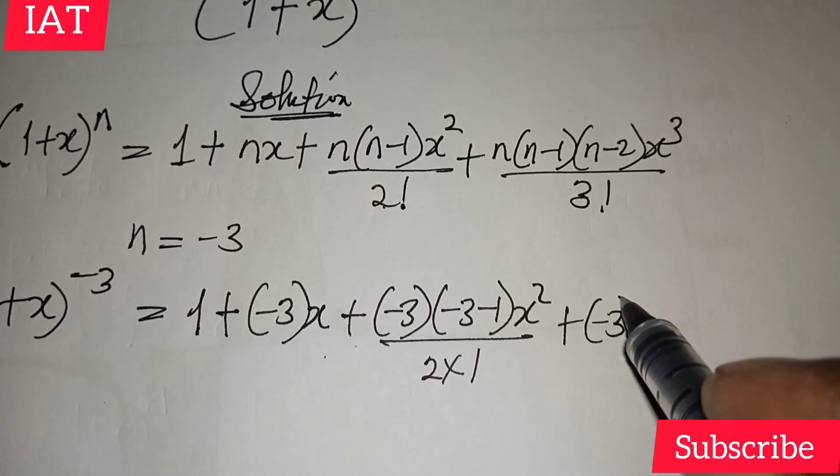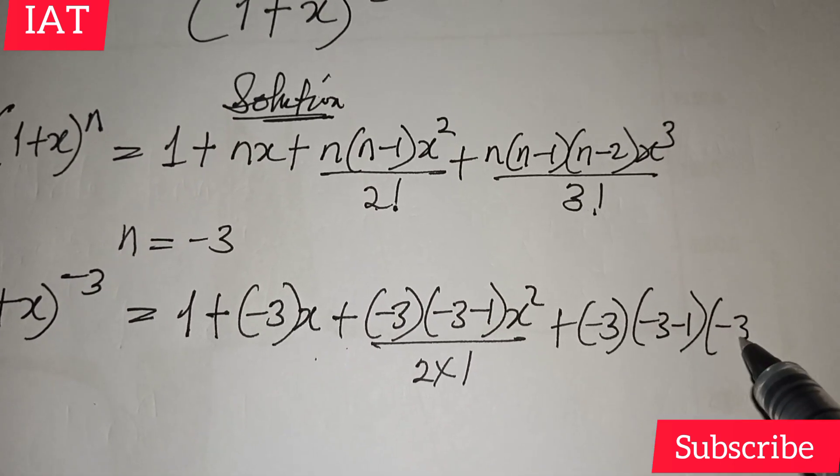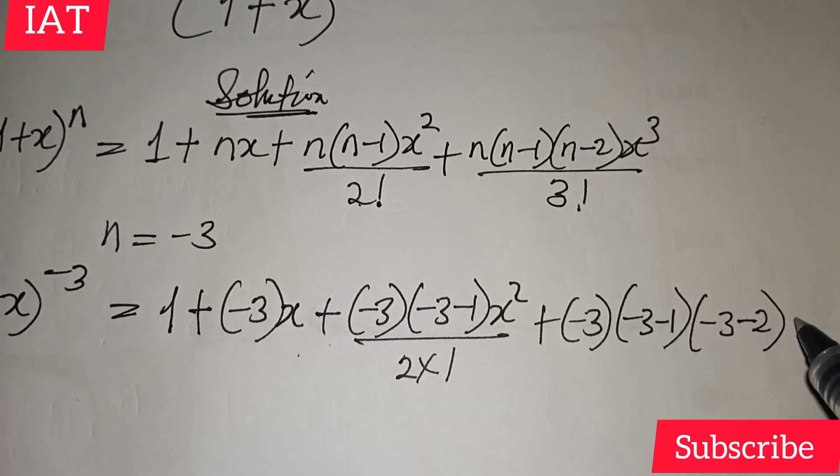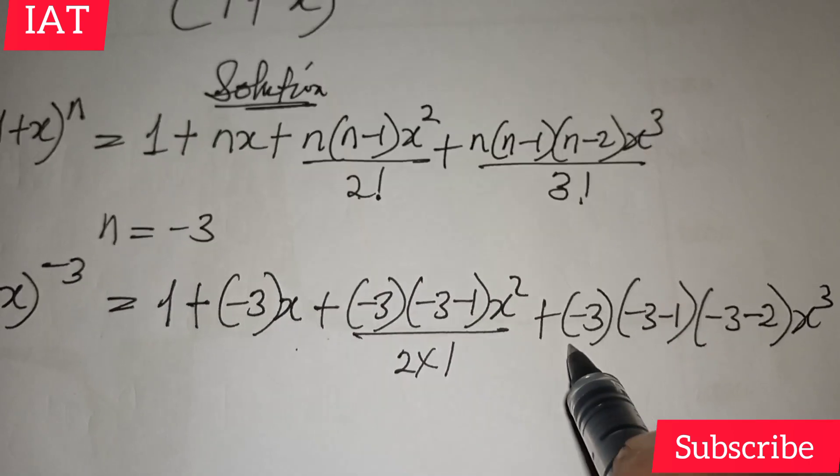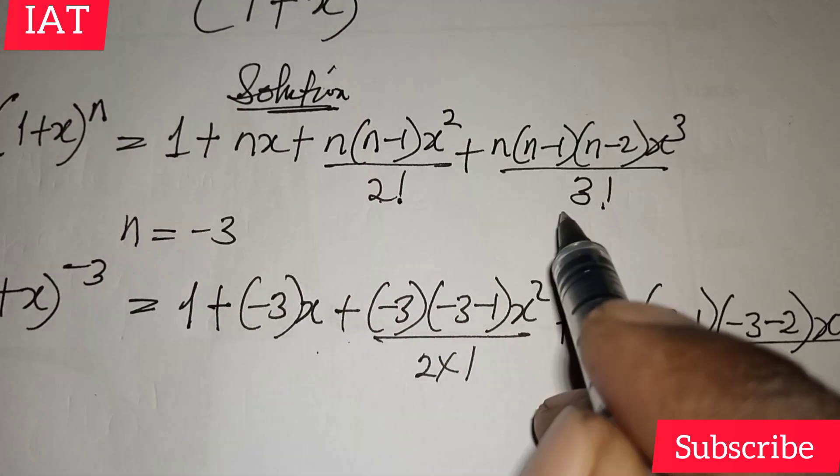we have (-3) into (-3-1) into (-3-2), x to the power of 3, all over 3 times 2 times 1. That's 3 factorial.